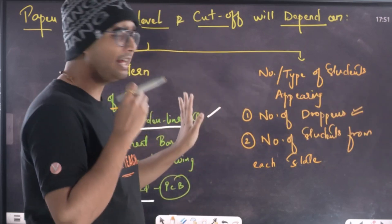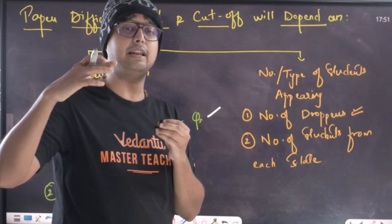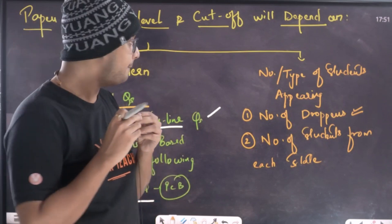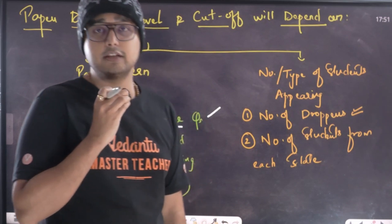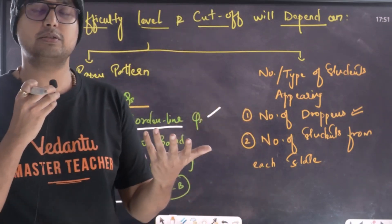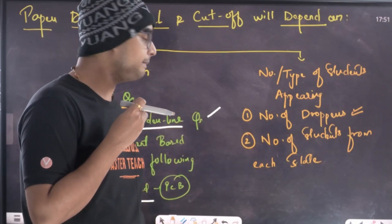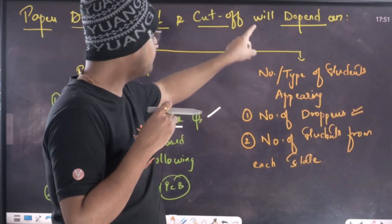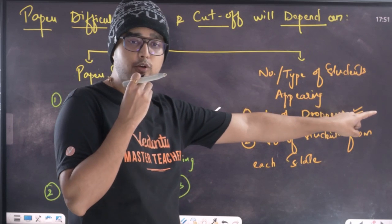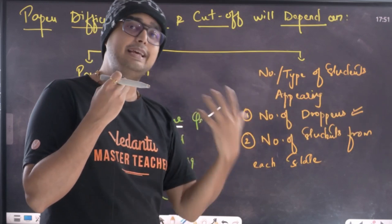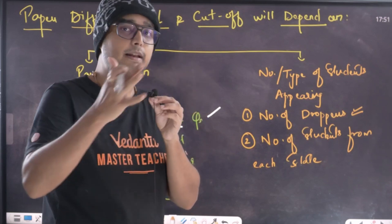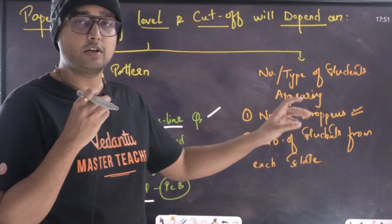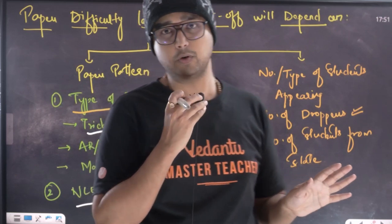The number and type of students appearing matters. Any number of students — you choose the number. Number of droppers is also a factor. How many droppers apply? The number of students per state means competition level. You can imagine that you have a cut-off level. The number of droppers will actually change the cut-off. Cut-off depends on the droppers' priority. All of that will matter.